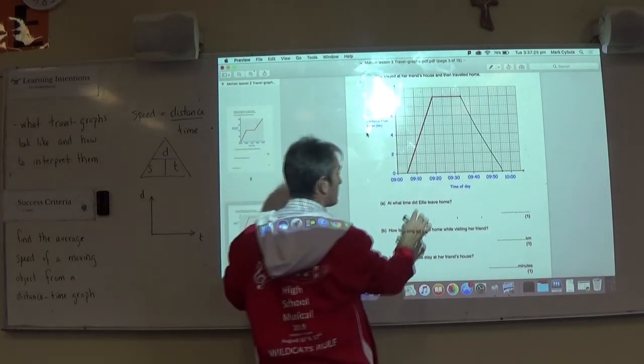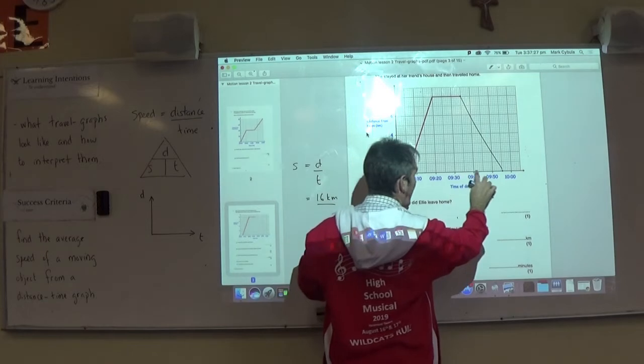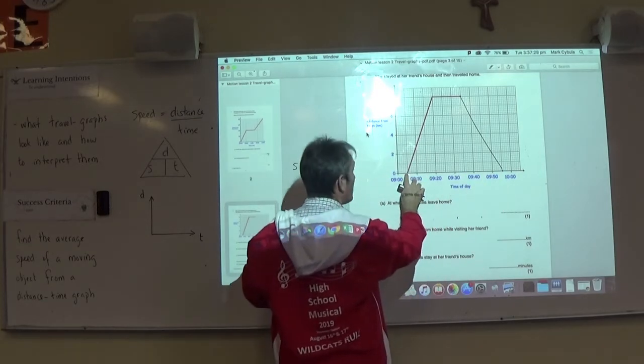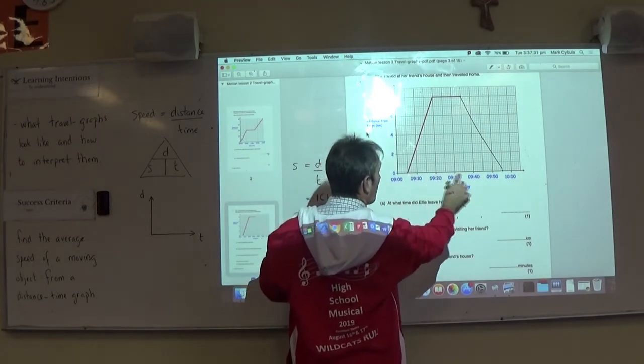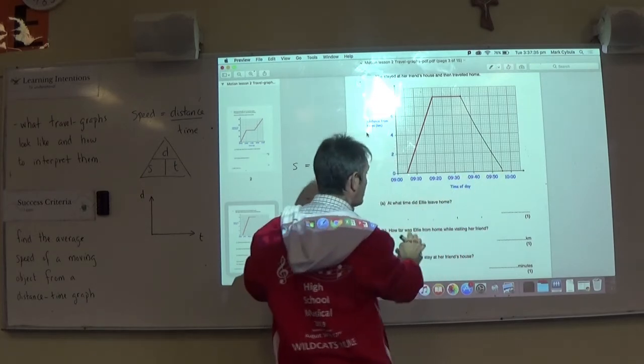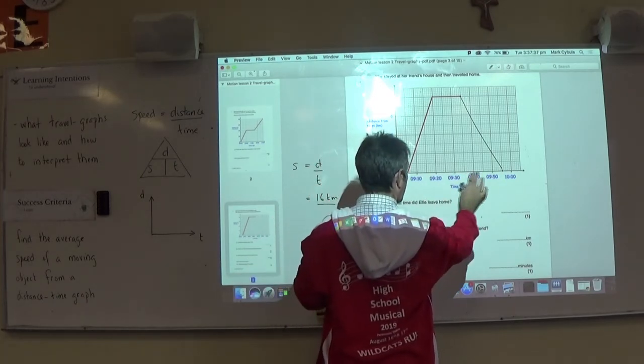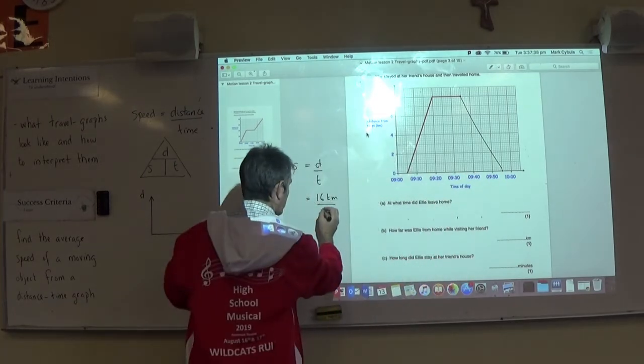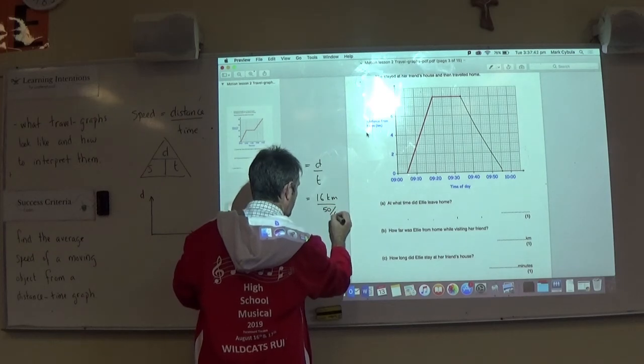I would then need to be able to work out from my graph here how long it's taken from when she left home to a friend's place when she stayed for a period of time before she returned home again. In this case here, 50 minutes. That's 50 out of the 60 minutes.